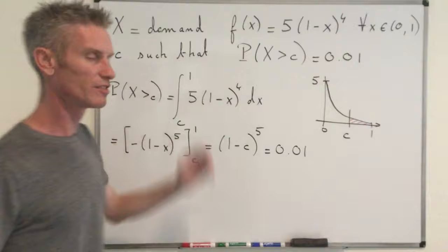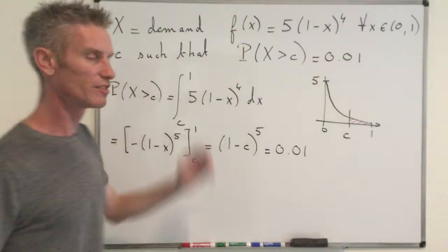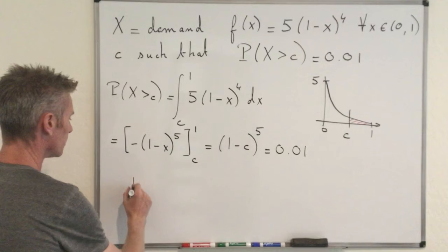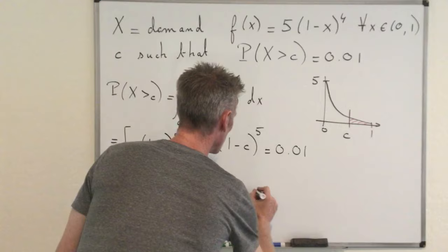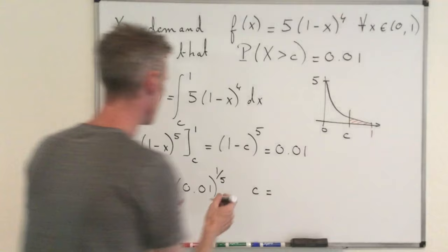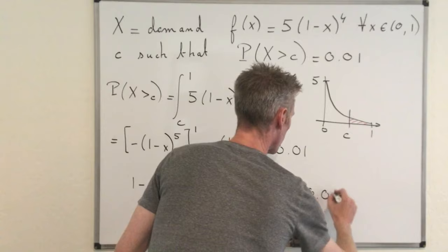And then you just have to solve the equation, solve for C. Eventually you get that 1 minus C is equal to 0.01 at the power 1 fifth. And then, conclusion, C should be equal to 1 minus that number, so 1 minus 0.01 at the power of 1 fifth.